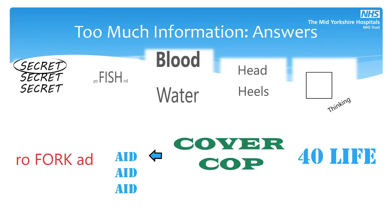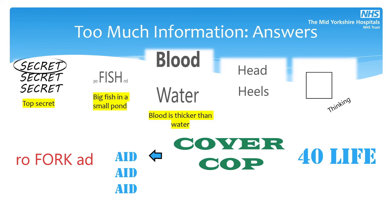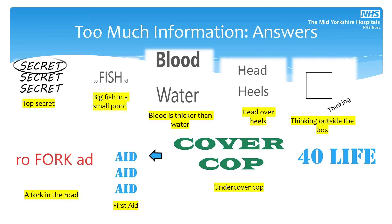Here are the answers. Number one: top secret. Number two: big fish in a small pond. Number three: blood is thicker than water. Number four: head over heels. Number five: thinking outside the box. Then: a fork in the road, first aid, undercover cop, and life after 40.